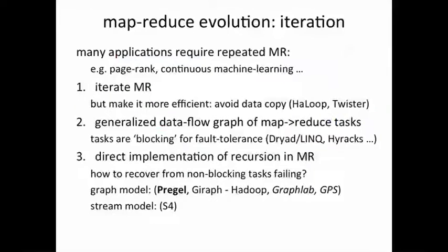Let's revisit some of the challenges and potential solutions that we looked at a while back. Many applications require repeated MapReduce. PageRank will be one example we'll talk about later. So there are many ways of trying to optimize MapReduce if you have to repeat it many times. One is to make it more efficient by avoiding copying data between successive reduce and map phases.